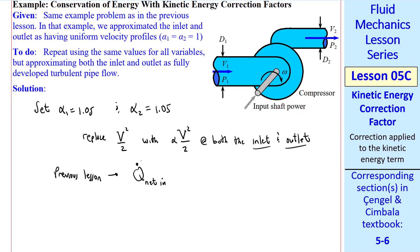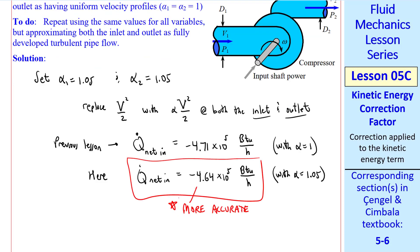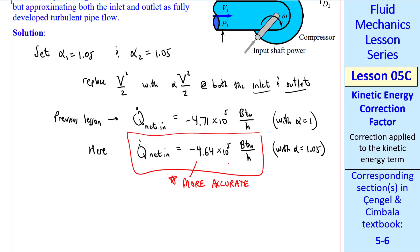In the previous lesson, the net rate of heat transfer into this compressor was negative 4.71 × 10⁵ BTU per hour, with α equal 1. Here our answer becomes negative 4.64 × 10⁵ BTU per hour, with α equal 1.05. This answer is more accurate, because we've put in the correction factor.